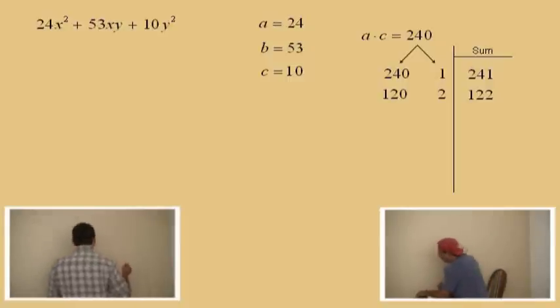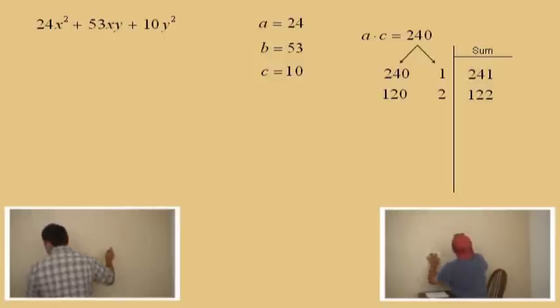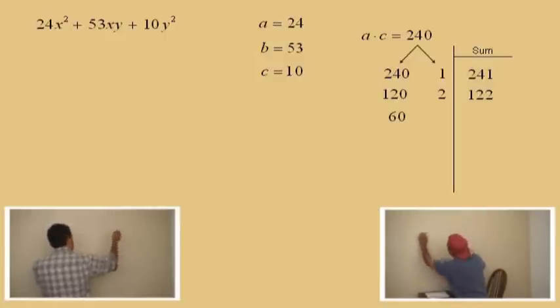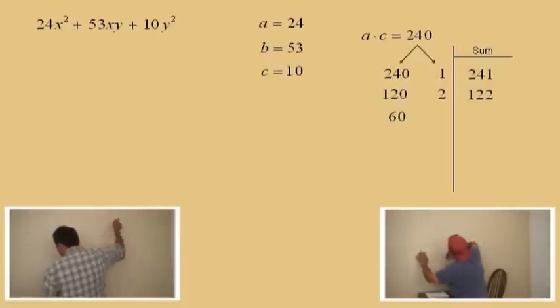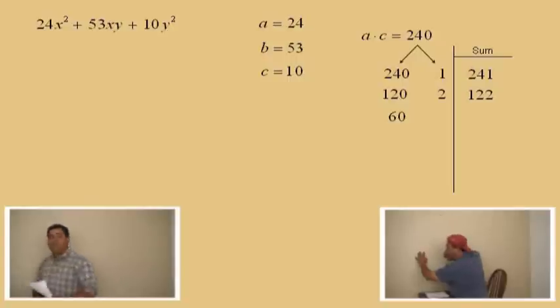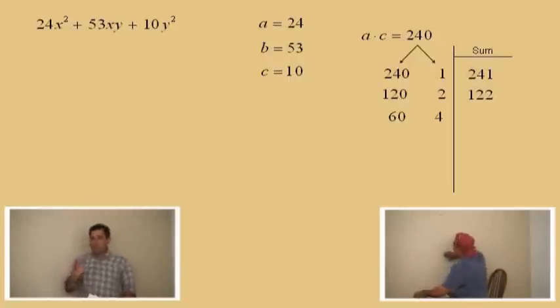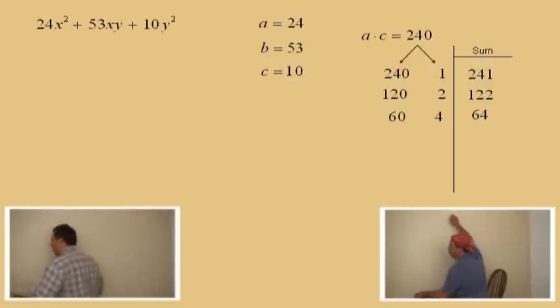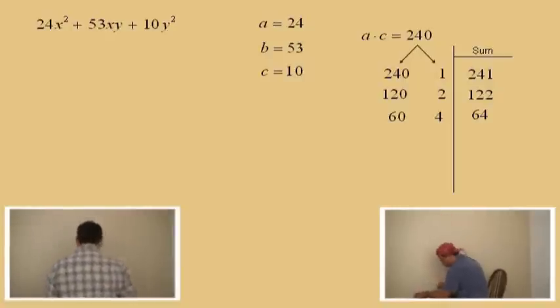Let's go to the next term, Charlie. What's half of 120? 60. Since we took half of this, we've got to double the other one, right? Divided by 2, multiplied by 2. So 120 divided by 2 is 60. Now what's 2 times 2, Charlie? 4. And of course, 60 times 4 is 240. Now what do they sum to, Charlie? 64.